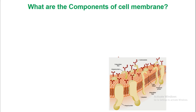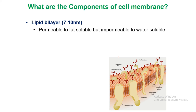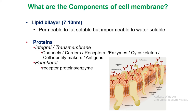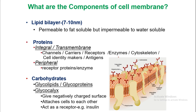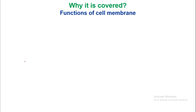Components of the cell membrane: first, the lipid bilayer, which is 7 to 10 nanometers in size — permeable to fat-soluble substances but impermeable to water-soluble substances. Proteins include integral or transmembrane proteins, which form channels, carriers, receptors, enzymes, cytoskeleton, and cell identity markers including antigens; and peripheral proteins, which include receptor proteins or enzymes. Carbohydrates are present as glycolipids or glycoproteins, and the glycocalyx gives a negatively charged surface, attaches cells to each other, and acts as a receptor — for example, for insulin.